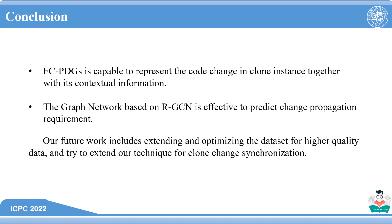We get the following conclusions. We constructed a large-scale dataset of clone pairs with propagated and non-propagated changes, which can be used for further studies. FCPDG is capable of representing the code change in a clone instance together with its contextual information. The graph network based on relational graph convolution network is effective to predict change propagation requirements. Our future work includes extending and optimizing the data for higher quality, and trying to extend our technique for clone-change synchronization.